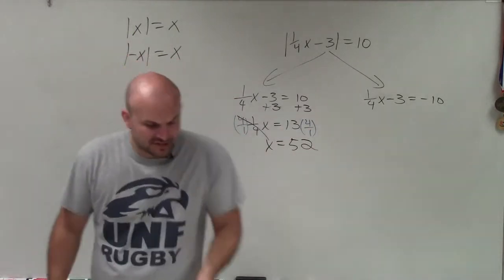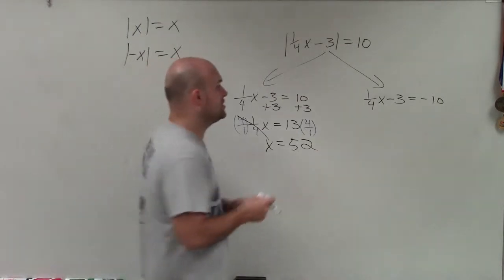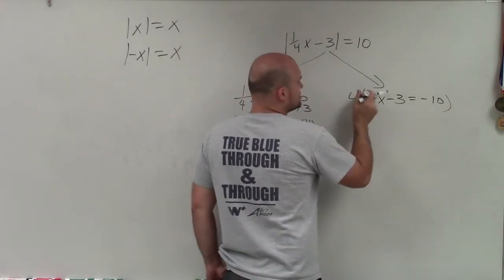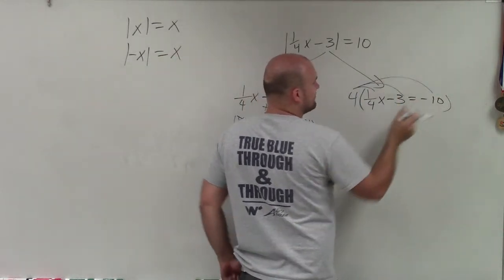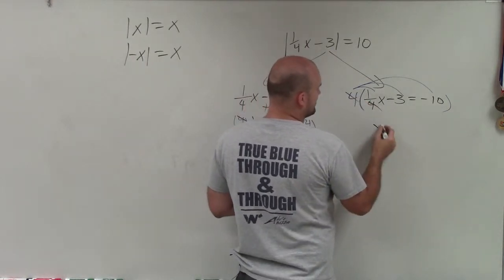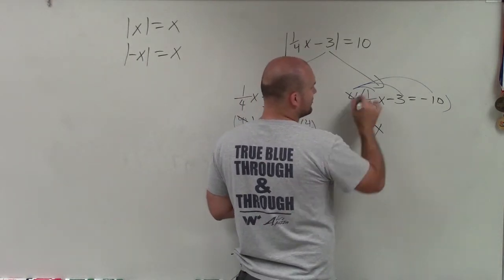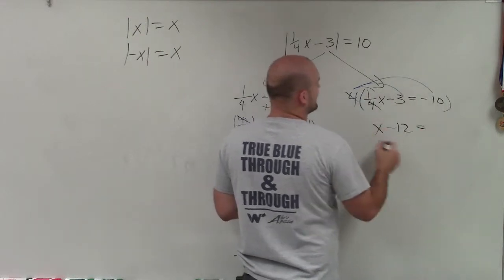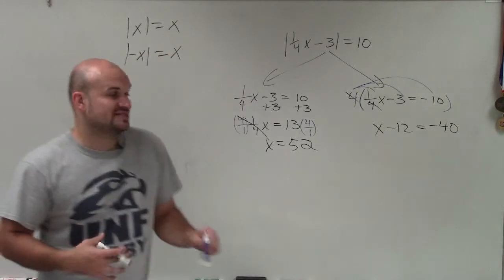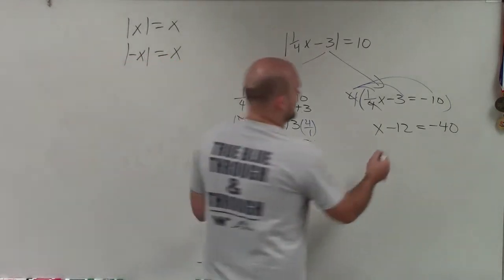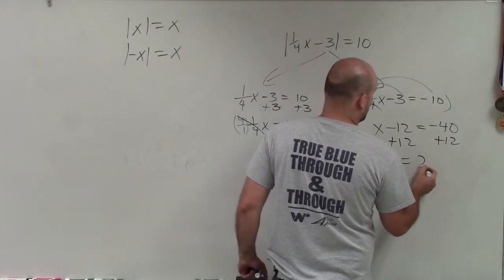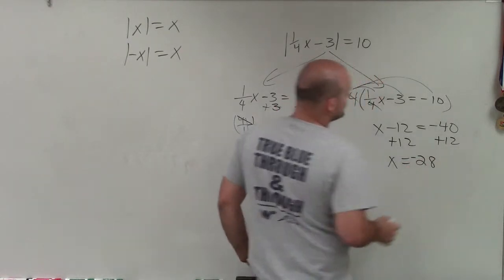Another way to deal with fractions is to just get rid of the fraction by multiplying every term by 4. When I multiply every term by 4, those cancel out, and I'm left with x. 4 times negative 3 is negative 12, and 4 times negative 10 is negative 40. So I have x minus 12 equals negative 40. To solve for x, I add 12 to both sides, and therefore x equals negative 28.